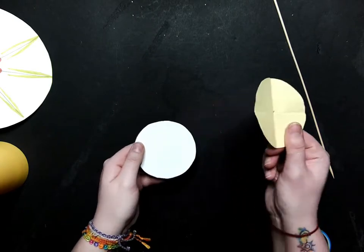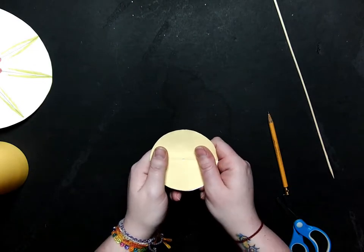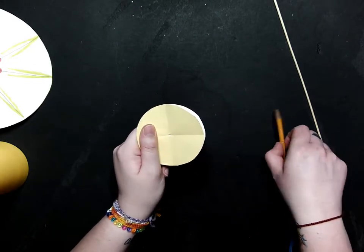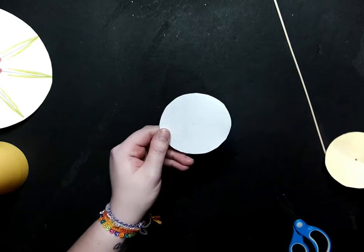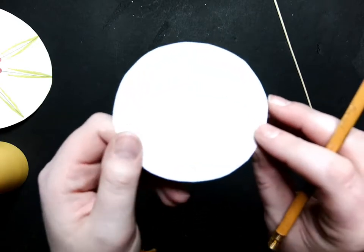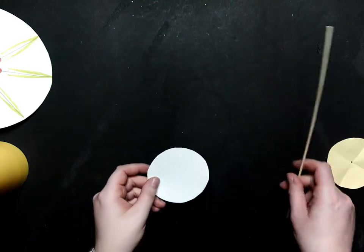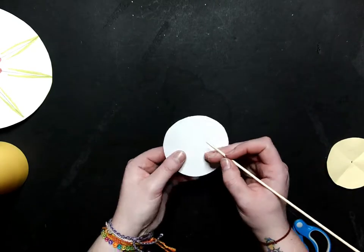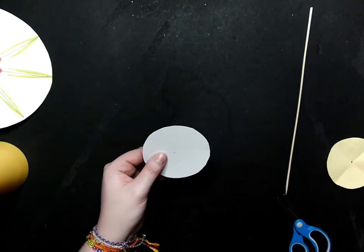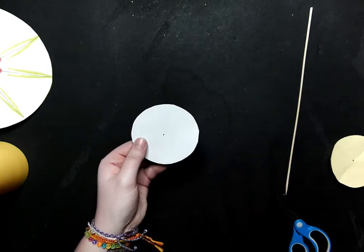And we'll go through there like that. And then we'll line up the second circle with the first circle, just like that. And we can mark where that circle goes or where the hole is going to go. Once you've got that done, you can go ahead and poke a hole through the first circle.